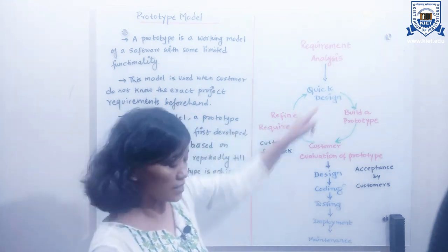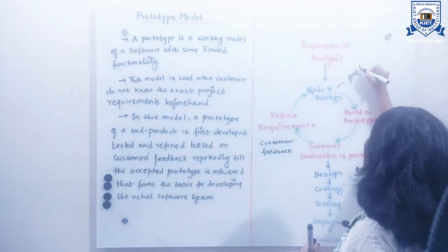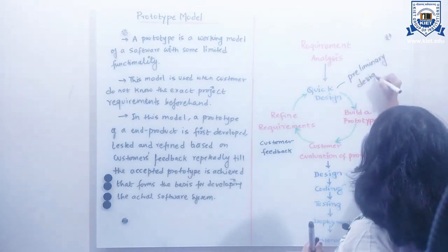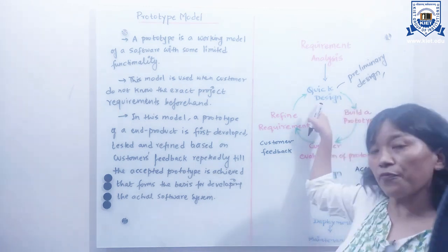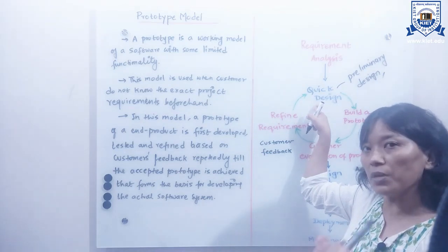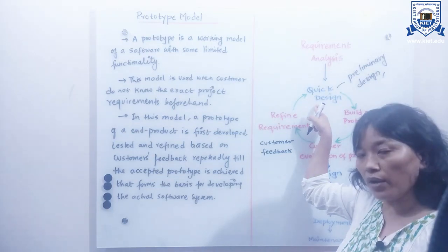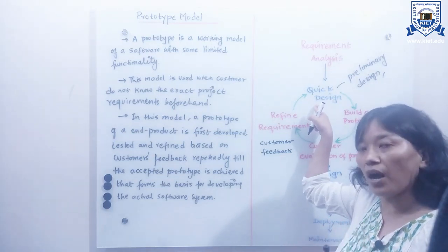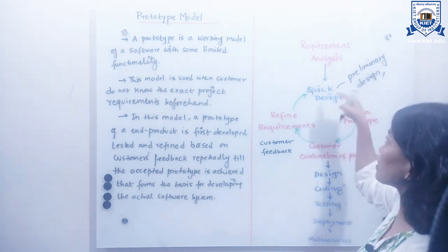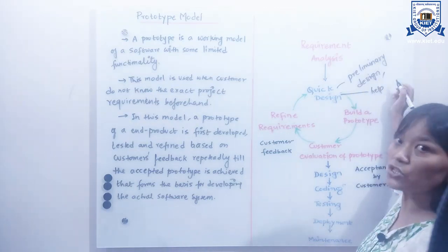In the second phase, that is the quick design, also called preliminary design, a simple design of the software system is created. Although this design is not the complete one, it gives a brief idea about the software system to the user. This quick design basically helps to develop the software system.